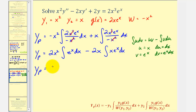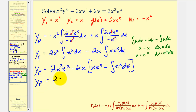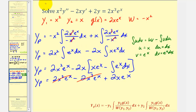So now we have big y sub p equals two x squared times the integral of e to the x, which is just e to the x, so we have two x squared e to the x, minus two x times this integral. When we apply integration by parts, that would be u times v, or x e to the x, minus the integral of v du, which would just be e to the x dx. Since the integral of e to the x is just e to the x, we'll have negative two x times negative e to the x, giving us plus two x e to the x. Notice how these two terms simplify to zero, so finally, the particular solution is just two x e to the x.